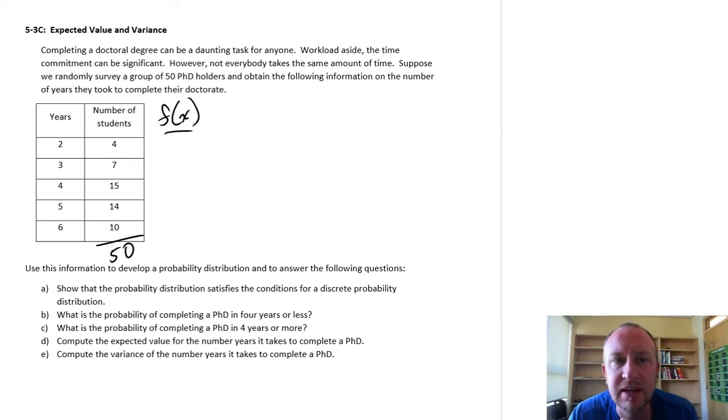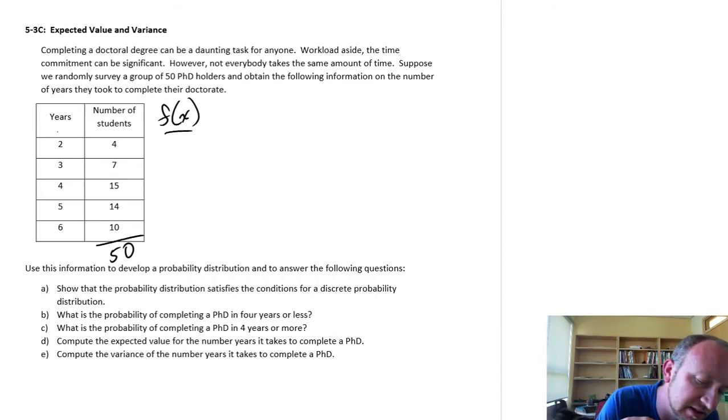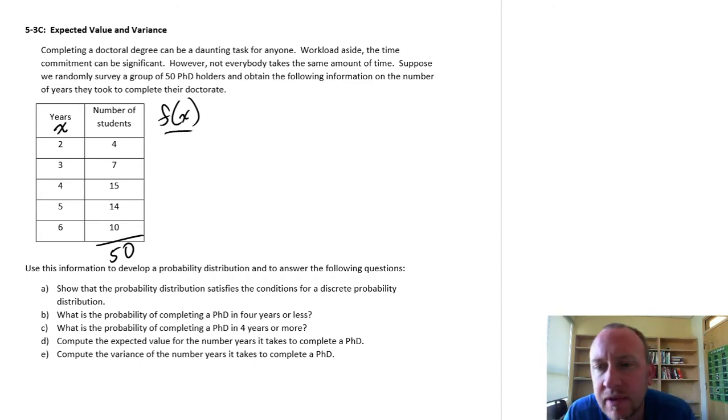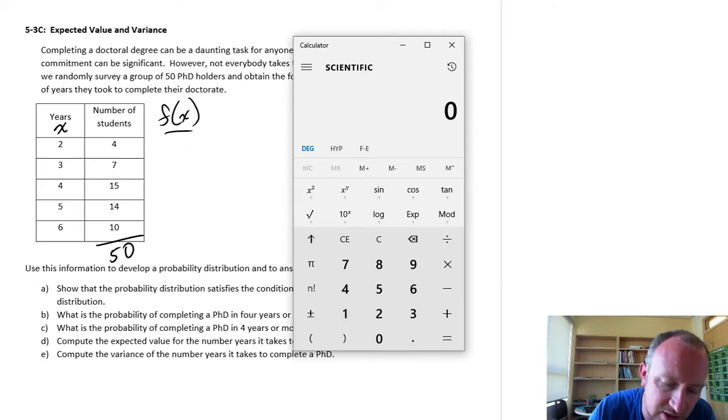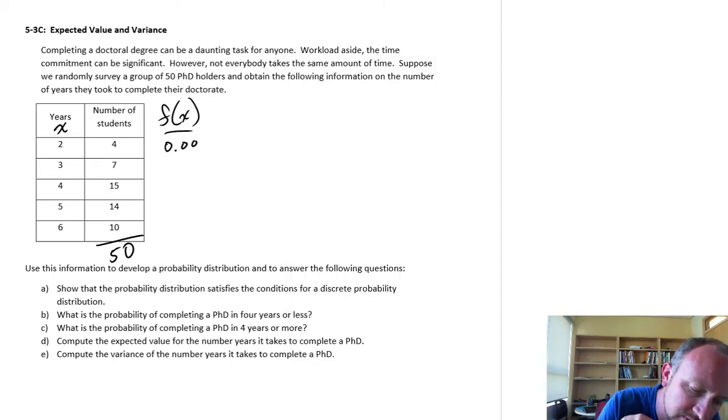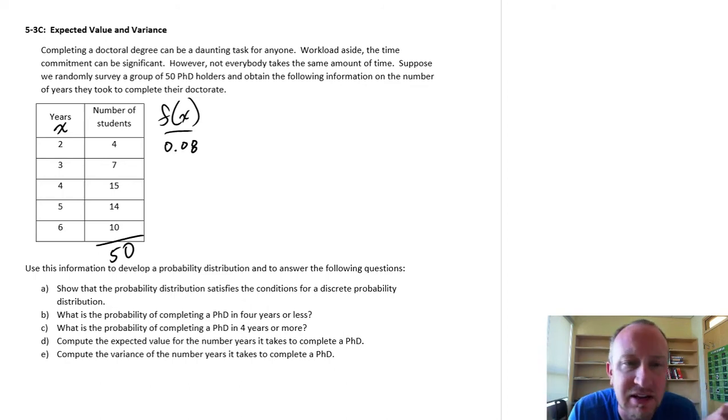The first thing we need to calculate is the relative frequency, the frequency of observations for each of these individual values for our discrete variable. In order to calculate these, it's fairly straightforward. We just need to look at the number of students who took 2 years to complete their doctoral. That would be 4 divided by a total of 50, so that's 0.08. We can interpret that as, if we randomly selected some individual with a PhD, there's a probability of 0.08, or an 8% chance that that randomly selected PhD holder took 2 years to complete their PhD.